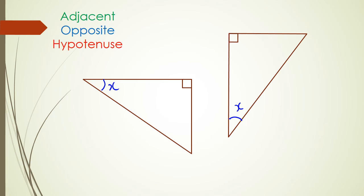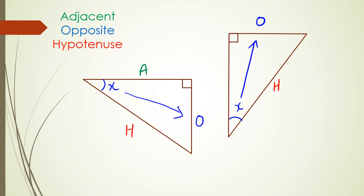I'm hoping you've paused and copied the diagram and put some labels, so you can check your answers. On the left-hand side, the hypotenuse is opposite the right angle, the Opposite side is opposite the angle, and Adjacent is the side next to the angle. On the right-hand side triangle, the hypotenuse is that longest side, the side opposite the angle is Opposite, and the adjacent side next to the angle is Adjacent.